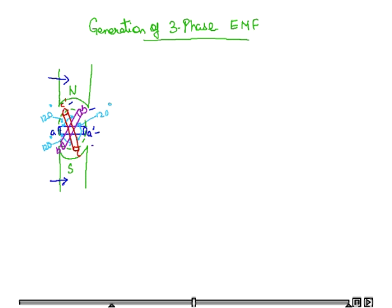These are identical coils mounted on the same axis but displaced by 120 degrees. This 120-degree difference in these three in clockwise direction in a bipolar magnetic field as shown here.